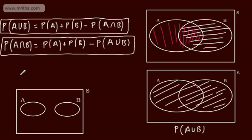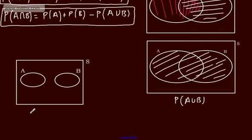We're going to look briefly at mutually exclusive events — I'll spend more time on this in later videos. Mutually exclusive events can't happen at the same time. A good example would be with playing cards: you can't have a black card that's a heart. They are mutually exclusive events, and in terms of the Venn diagram, they're going to have no points of intersection. So for mutually exclusive events, the probability of A union B is equal to the probability of A plus the probability of B.